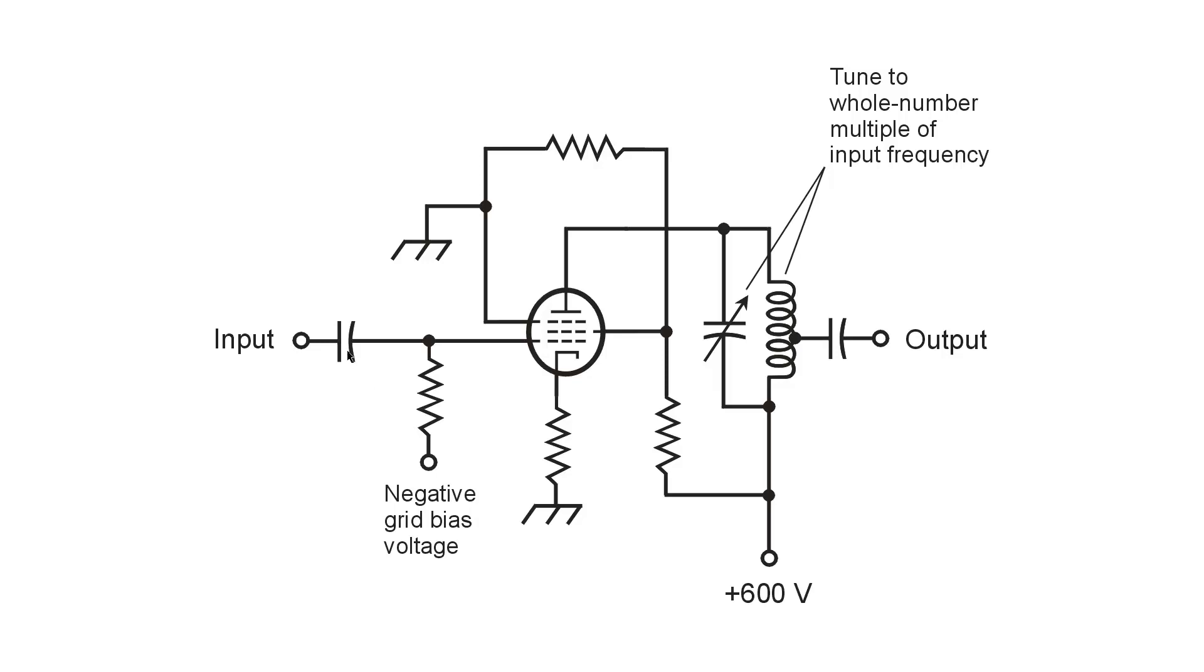But during the negative part of the cycle, the negative grid voltage exceeds the bias voltage and the tube remains cutoff. So in effect, it rectifies the signal, but it also produces gain because it is a vacuum tube amplifier.